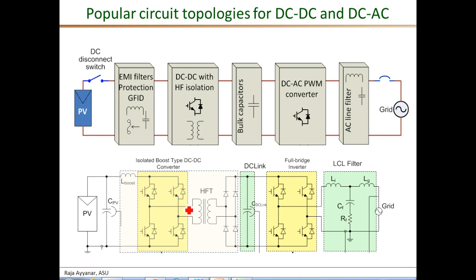The DC link itself is made of an array of electrolytic capacitors, although newer designs and current research are focusing on reducing the capacitance requirement so that it can be supported by film capacitors, which are much more reliable than electrolytic capacitors. The DC-to-AC PWM stage is very often implemented using a full bridge or H-bridge inverter as shown here, with either an L or an LCL filter.